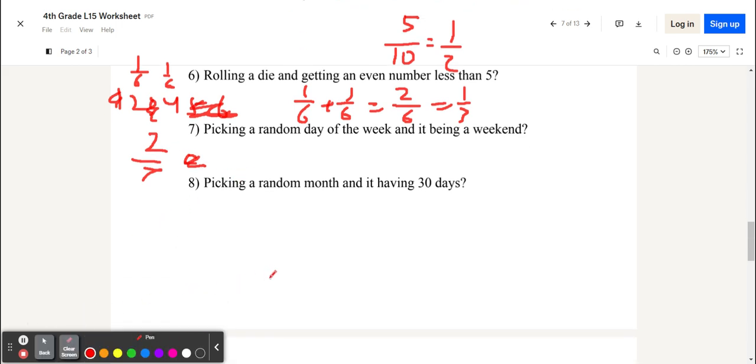And what's the probability of picking a random month and it having 30 days? Well, what months have 30 days? January has 31. February has 28. March has 31. April has 30, so we get 1. May has 31. June has 30. July has 31. August has 31. September has 30. October has 31. November has 30. December has 31. So, only 4 out of the 12 months have 30 days. So the probability is 4 out of 12, which equals 1 over 3.